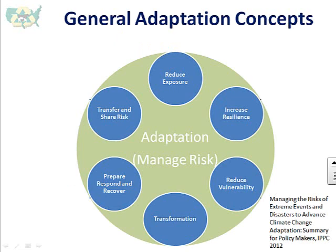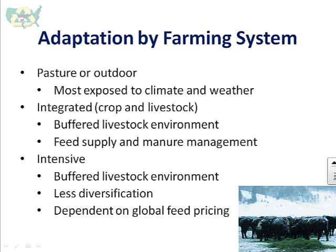Here are some general concepts in adaptation. The terminology, often used in city planning and climate change, includes: reduce exposure, increase resilience, reduce vulnerability, transformation, prepare, respond and recover, and transfer and share risk. Before getting into more detail on these terms and how they apply to the farm, let's go through some general concepts specific to livestock production.